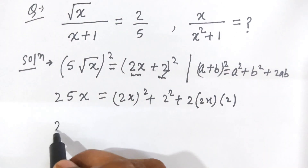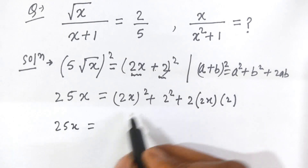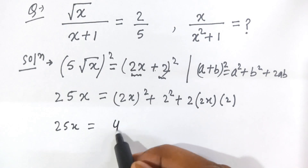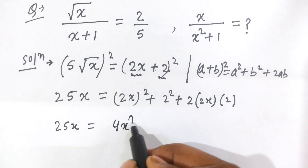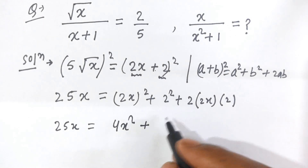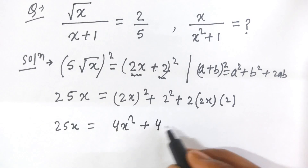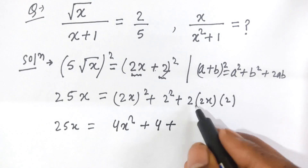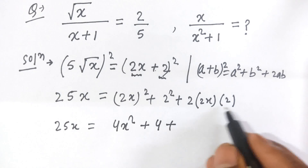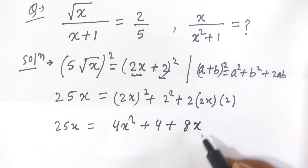Then on the left hand side is 25x, this is equal to 2 times x square that is 4 times x square, plus 2 square that is 4, plus 2 times 2 that is 4 times 2, that is 8 times x.